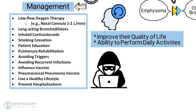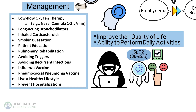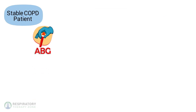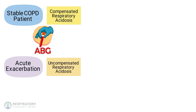Low-flow oxygen is recommended to keep their SpO2 between 88 and 92 percent. Remember this range is acceptable and preferred for patients with COPD. For a stable COPD patient, ABG results will show compensated respiratory acidosis. For an acute exacerbation, the ABG results will likely show uncompensated respiratory acidosis.